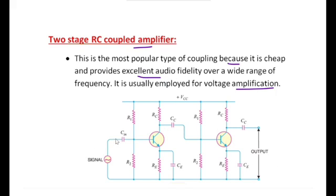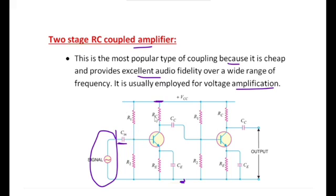In the operation of this circuit, we apply the input signal at the first stage input side — at the base of the first transistor — through an input coupling capacitor. Biasing voltage VCC is provided to both stages at a time. The first stage has a potential divider biasing circuit. The signal applied at the input is connected to the base, the transistor amplifies the signal, and at the collector terminal we get the amplified output signal.